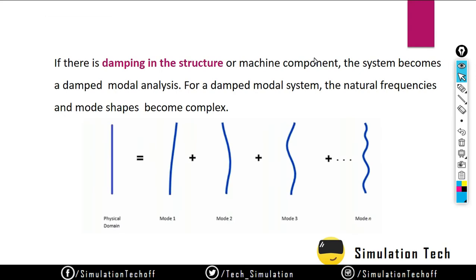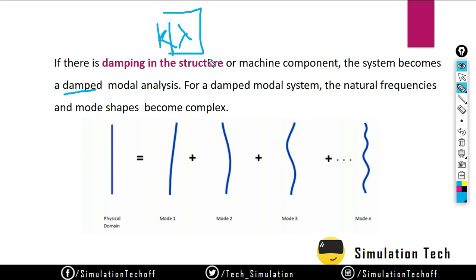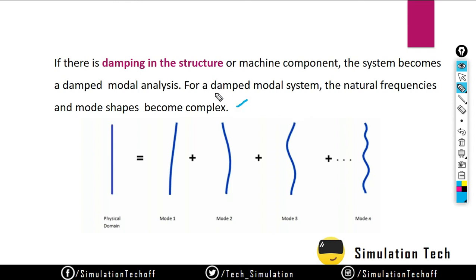If there is damping in the structure or machine component, the system is converted into a damped modal analysis. You can include the damping factor — lambda. If you have the damping factor, you can include it in the modal analysis itself. For a damped modal system, the natural frequencies and mode shapes become more complex, since damping is a factor that eliminates vibration.